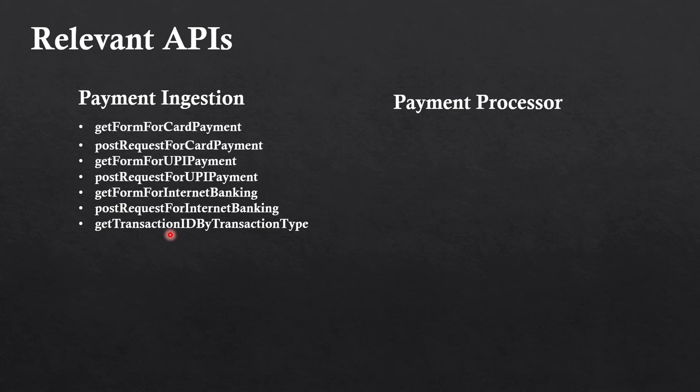For the payment processor, the APIs include: process UPI payment, process card payment, process internet banking payment, retry on failure, and get the ISO message for a given XML or JSON message. These are the relevant APIs for the payment processor side of the gateway.